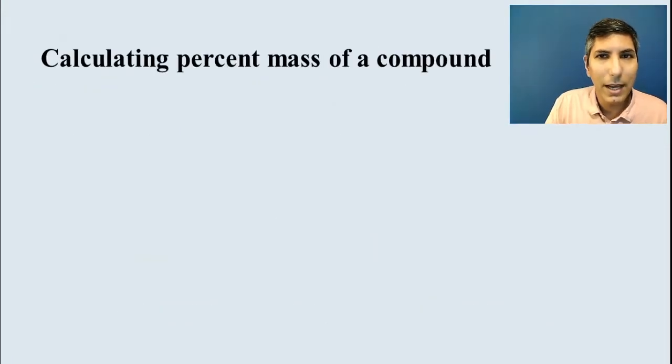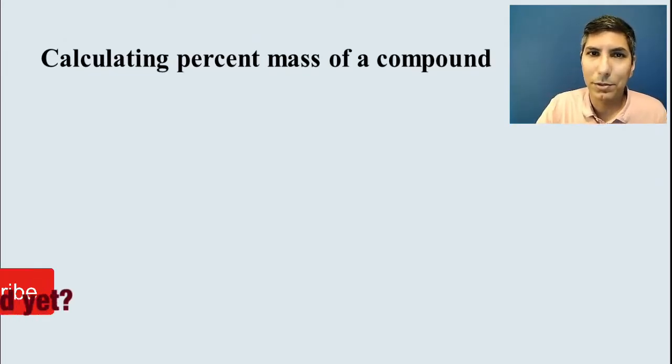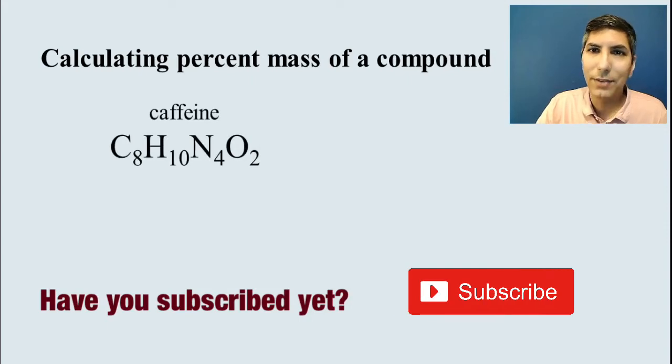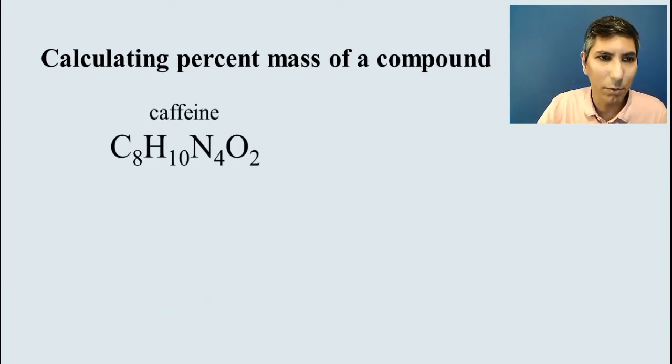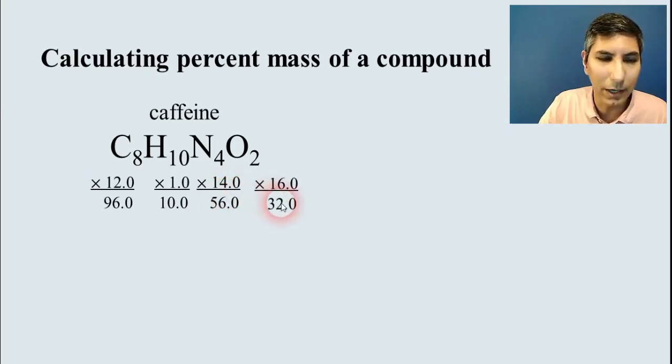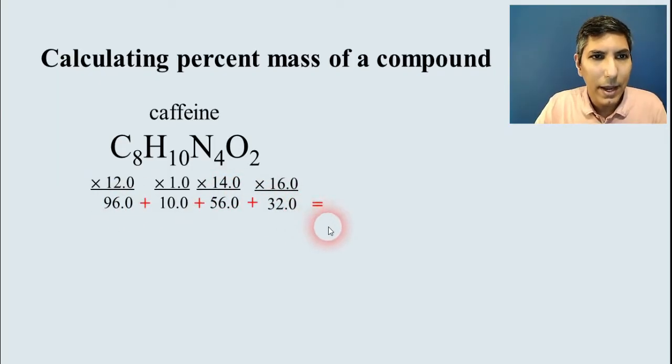Now, when we take a compound, we have learned already how to calculate the mass percent. So just as a very quick example, in the case of caffeine, there is its formula. We just take each number, each number of atoms there, multiply it by its atomic mass. We have 12 for carbon and about 1 for hydrogen and about 14 for nitrogen and 16 for oxygen. And then we add those values together and we see that the overall molecular mass of caffeine is about 194.0 AMU.